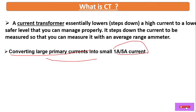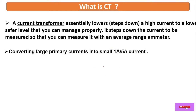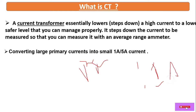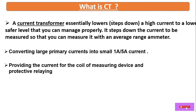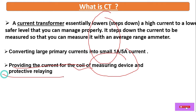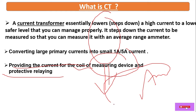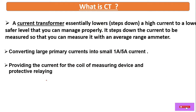So converting large primary current into one ampere or five ampere — this is the ratio of CT, which can be found expressed as primary current to one ampere or five ampere. What is the use of CT? It provides the current for the coil of measuring devices and protecting relay devices — for measuring devices like an energy meter, multi-function meter, or a protecting relay.